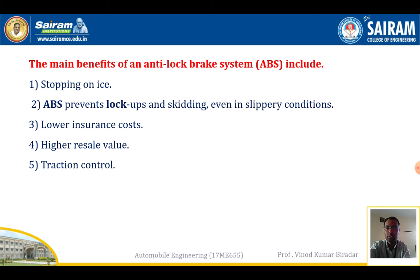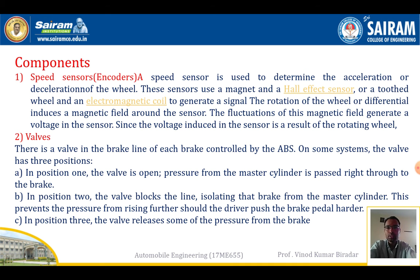To study the working of this Anti-lock Braking System, we first need to know the components used. The first component is speed sensors. Speed sensors are fixed at all four wheels. The main function of the sensor is to determine the acceleration of the wheel. These sensors use a magnet fixed near the wheel, that is the tooth hub, to generate an electromagnetic field and also generate electrical pulsation around the wheel.